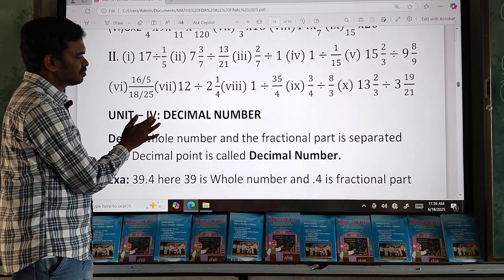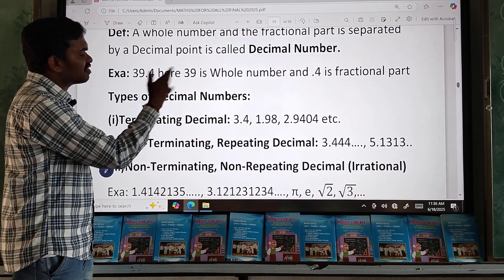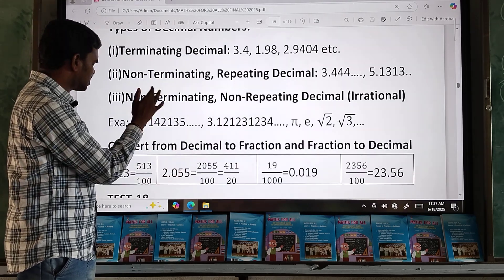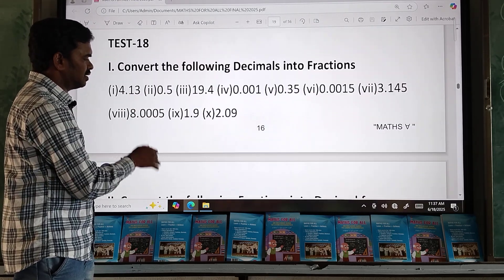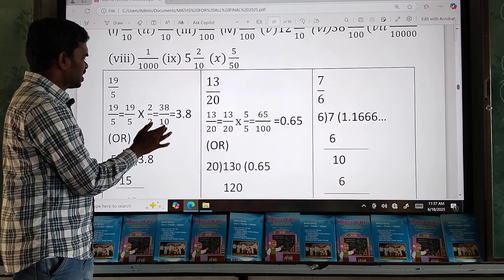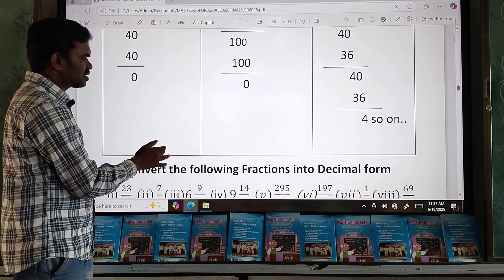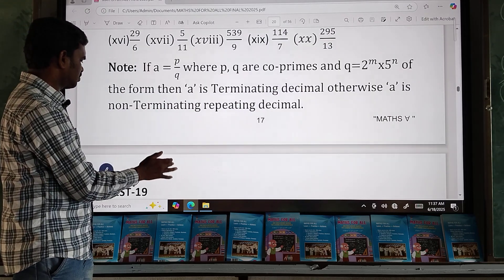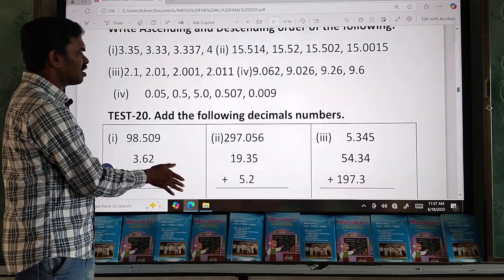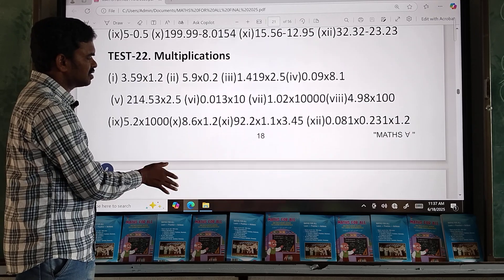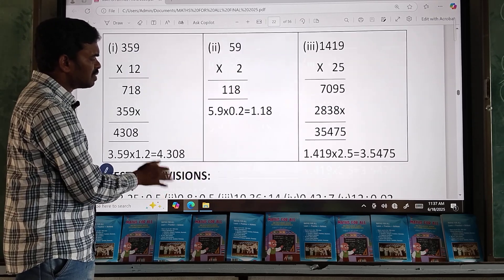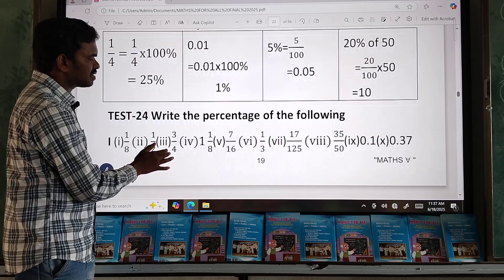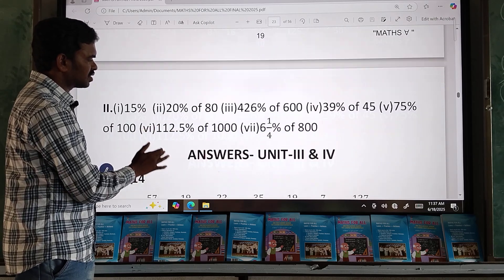Next, decimal numbers. What is the decimal number? Definition and type of decimal numbers. Three types of decimals are given. And convert from decimal to fraction. Decimals: addition, subtraction, multiplication, divisions, and percentages. Then answers.